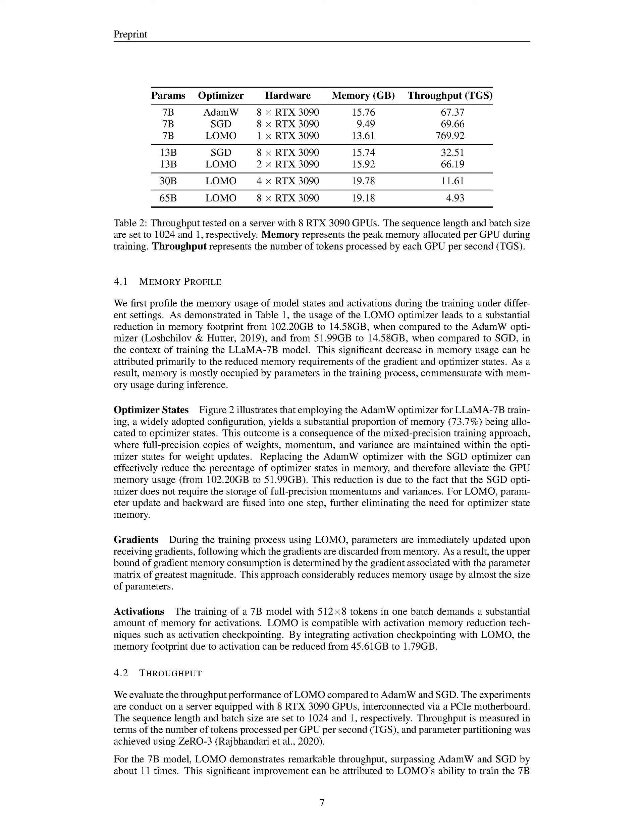During the training process using LOMO, we immediately update parameters as soon as we receive gradients, and then we discard these gradients from memory. This means that the most memory we'll ever use for storing gradients is determined by the gradient linked with the parameter matrix that has the largest size, significantly reducing memory usage approximately by the size of the parameters. Training a model with 7 billion parameters and a batch size of 4096 tokens can require a lot of memory for activations. However, LOMO works well with techniques like activation checkpointing that are designed to reduce activation memory.